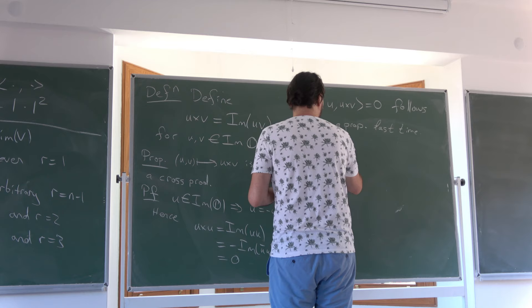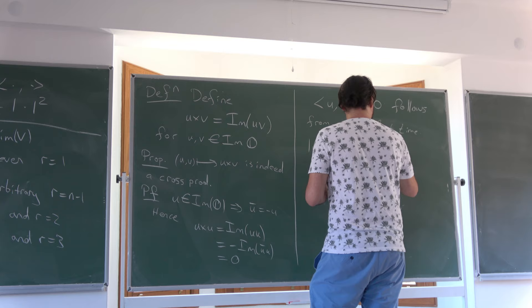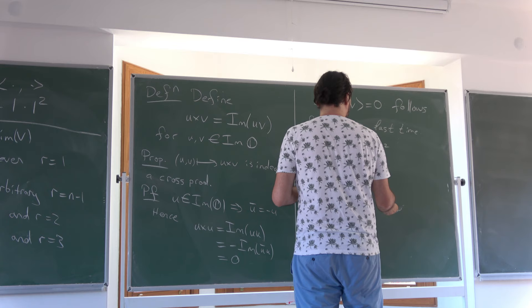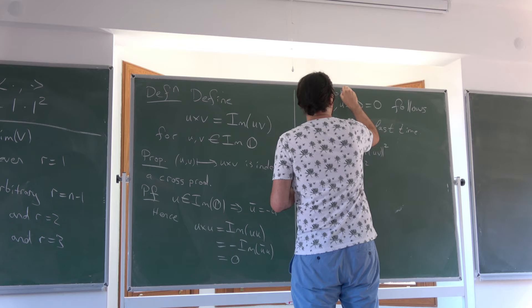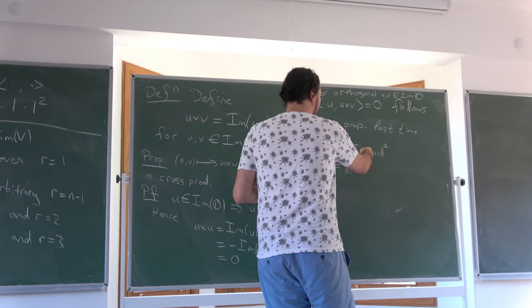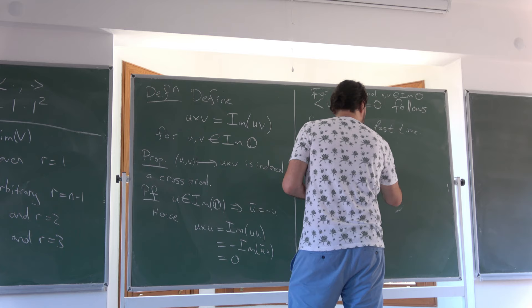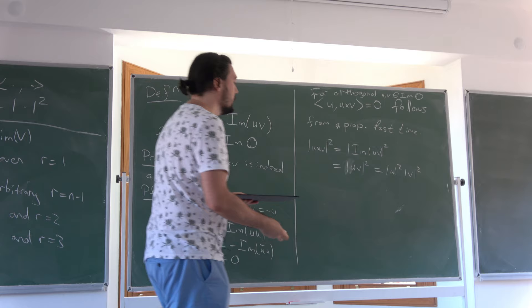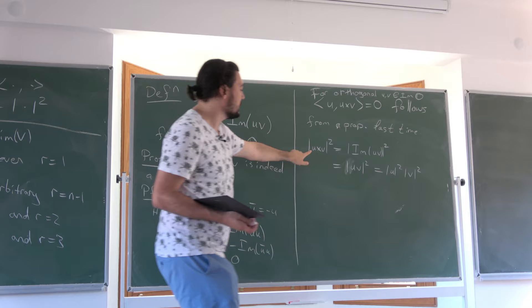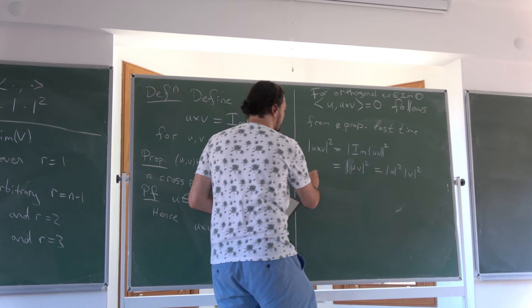The same proposition also gives us that the norm squared of u cross v equals the norm squared of the imaginary part of uv, which equals the norm squared of uv. For orthogonal u and v, the cross product and the usual product are the same, and this equals ‖u‖²‖v‖². So we've shown the map is alternating, and by the exercise from last time it's enough to check the norm squared equality for orthogonal vectors, which follows. Therefore it is a cross product operation.